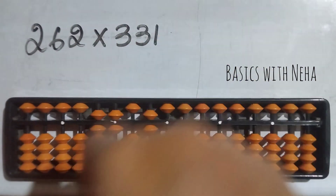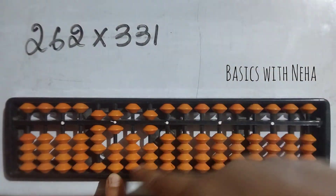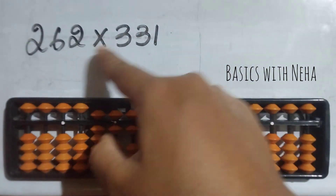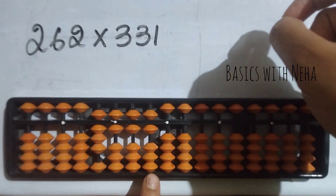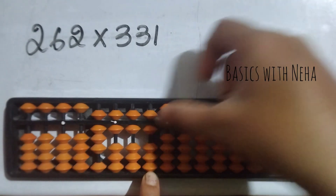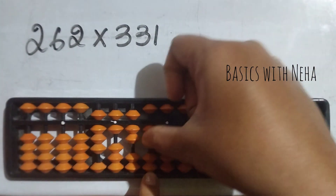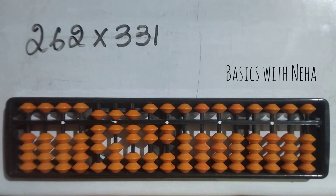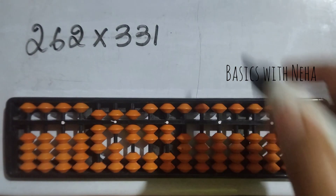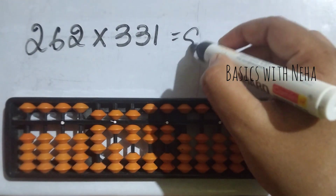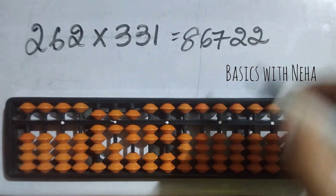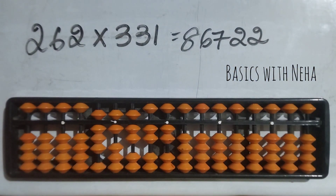Now do 2 into 331 — start from the fourth rod. 2 threes are 6 — zero six. 2 threes are 6 again — zero six, to be placed here which is plus ten minus five plus one. 2 ones are 2 — it is zero two. So the answer to this question is 386722. I hope this video was helpful — for more such videos please subscribe to my channel and support me.